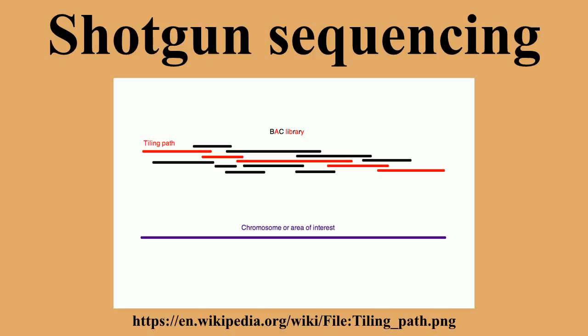For example, consider the following two rounds of shotgun reads. In this extremely simplified example, none of the reads cover the full length of the original sequence, but the four reads can be assembled into the original sequence using the overlap of their ends to align and order them.